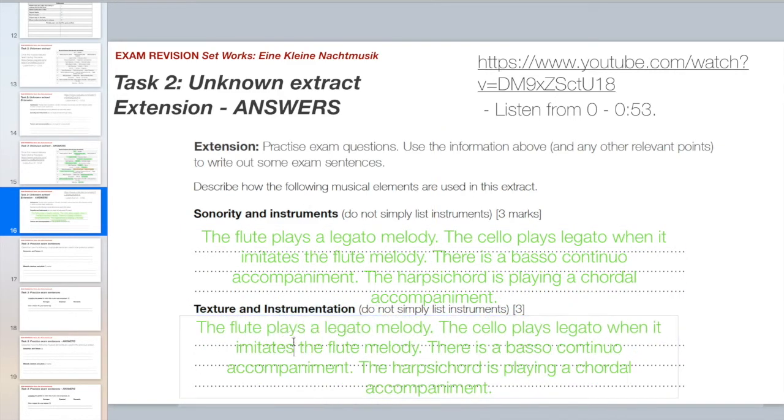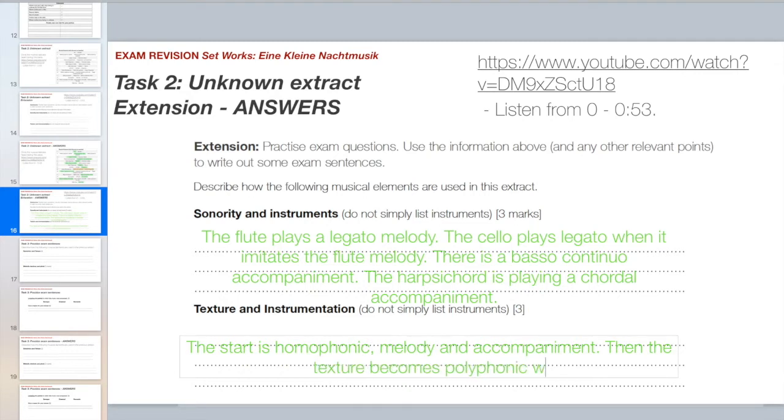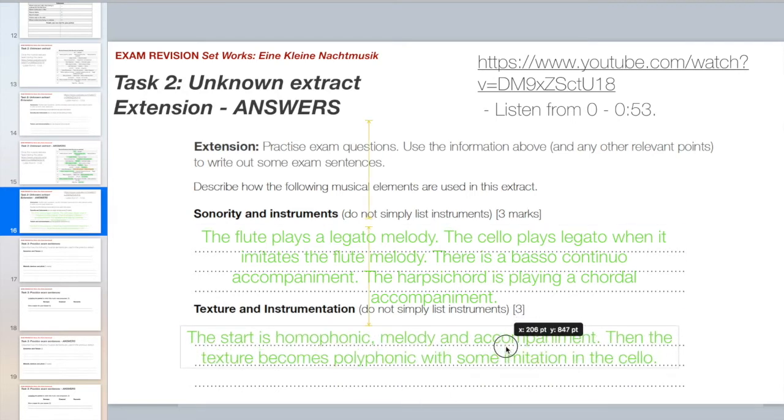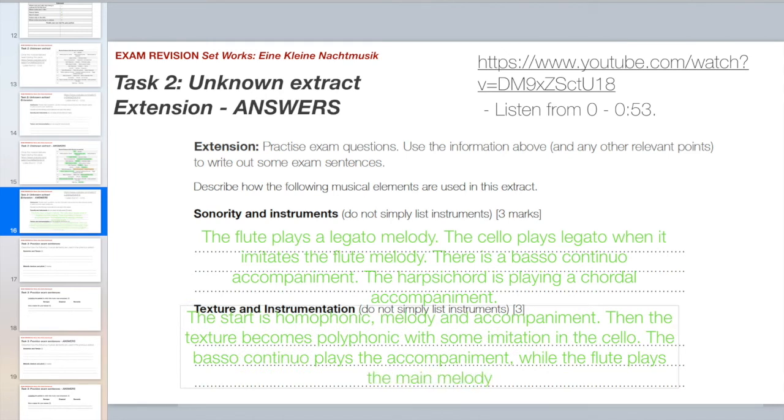Next, texture and instrumentation, we've already talked a bit about the texture, so the start is homophonic, melody and the complement, then there is a section where there's imitation in the cello, and some of the instrumentation points we can take from here, but I would say, if it was a question about texture and instrumentation, I would say, the basso continuo plays the accompaniment, while the flute plays the main melody and the violin.